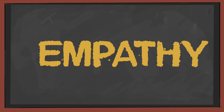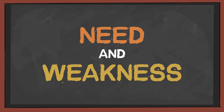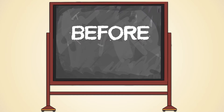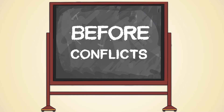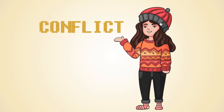We create empathy for a character when we show two aspects: weakness and need. These factors show a big picture of the character, which is important for the viewer to see as soon as possible, or at least before the great conflict occurs. If you don't know what a conflict is, I link you the video here.